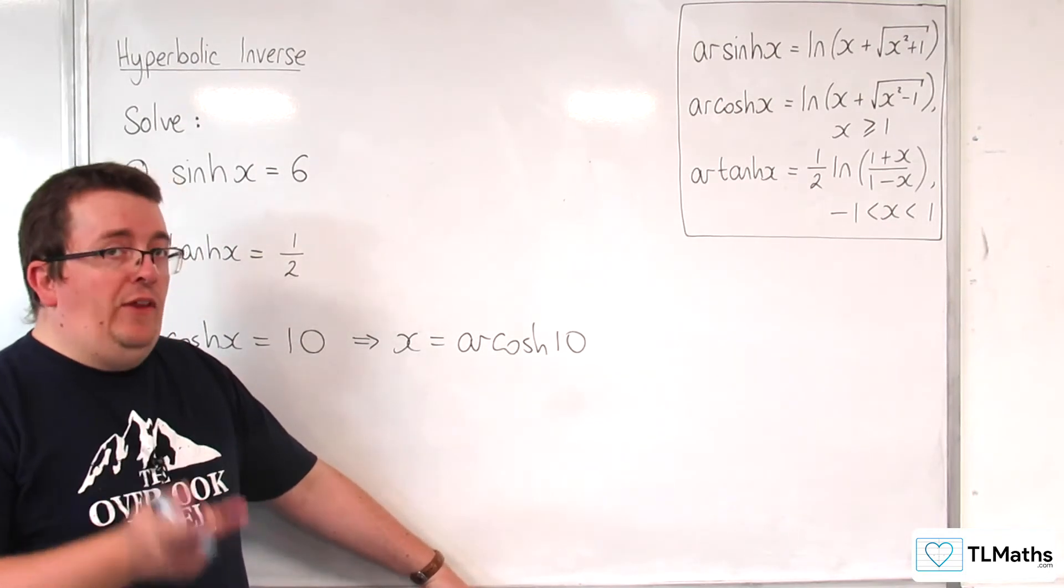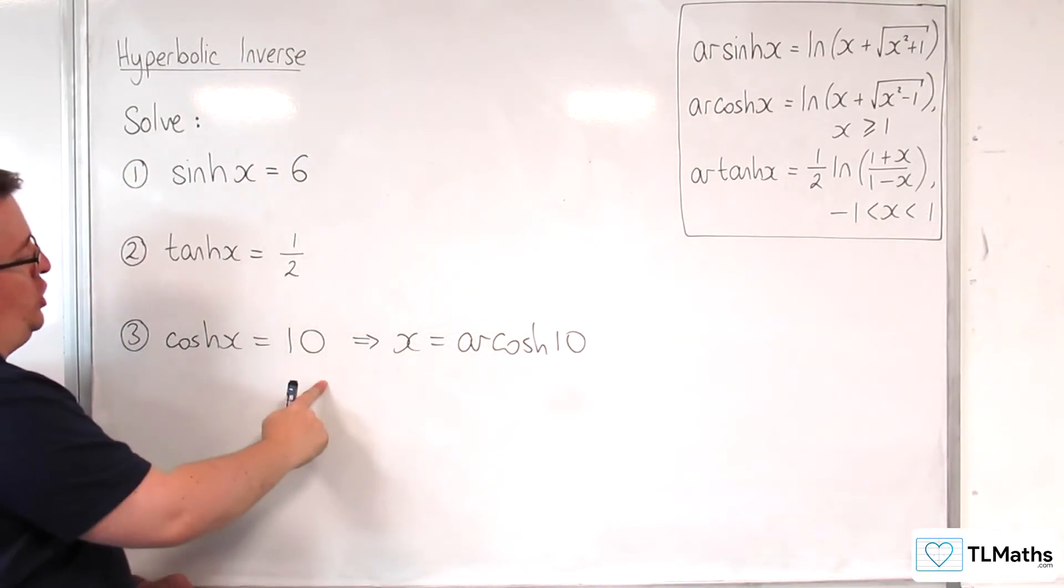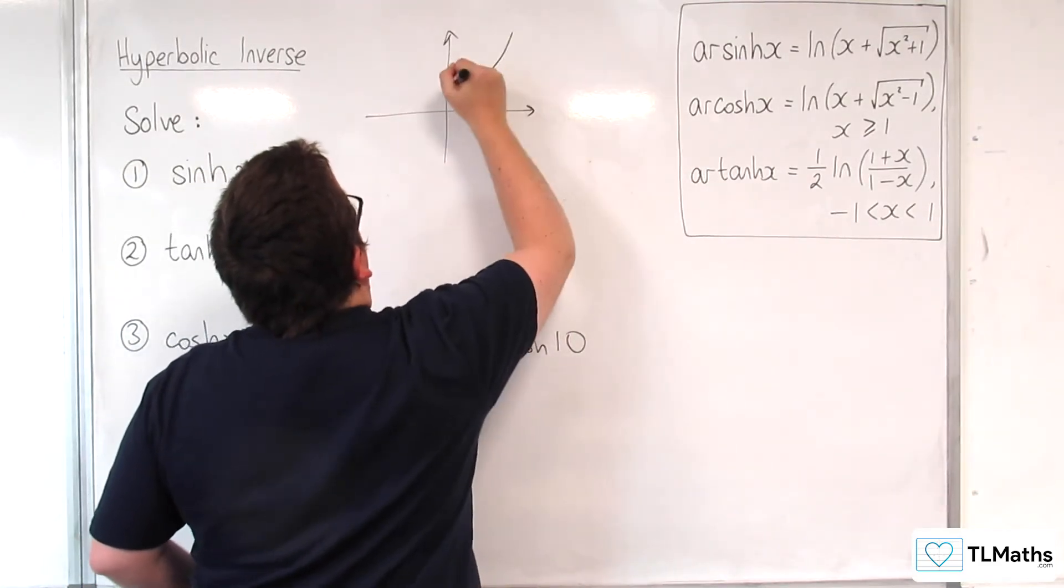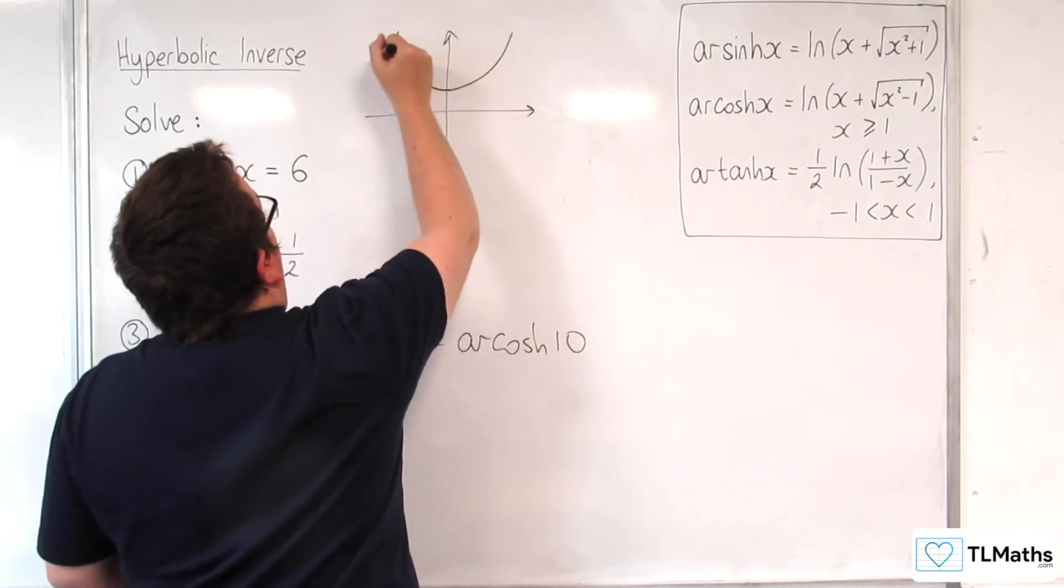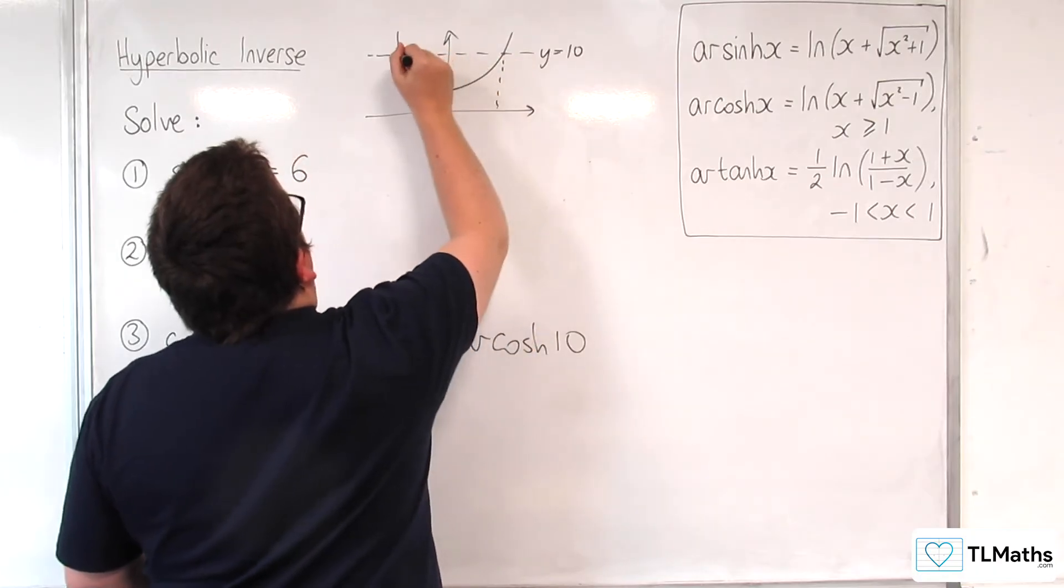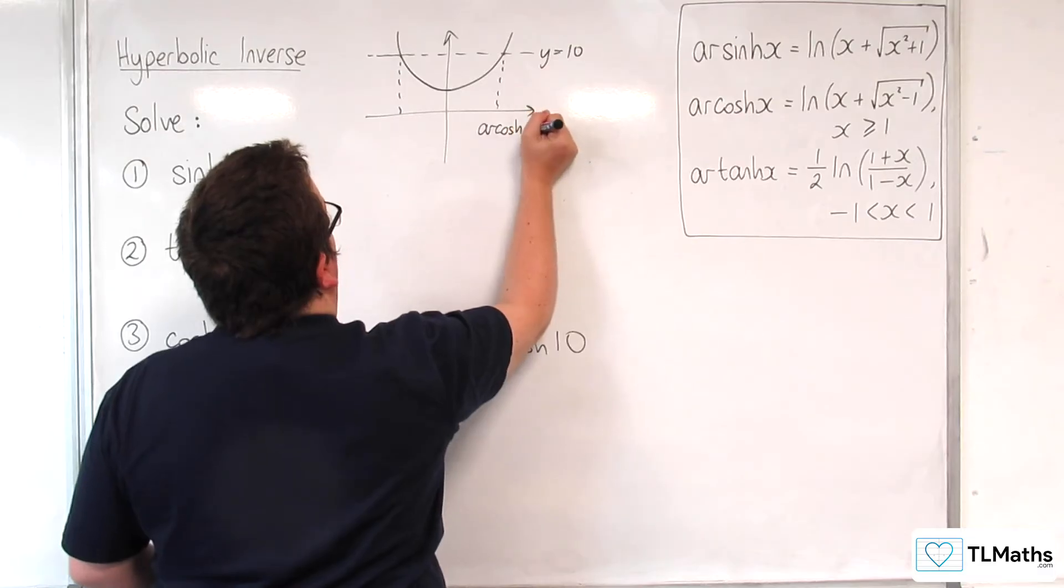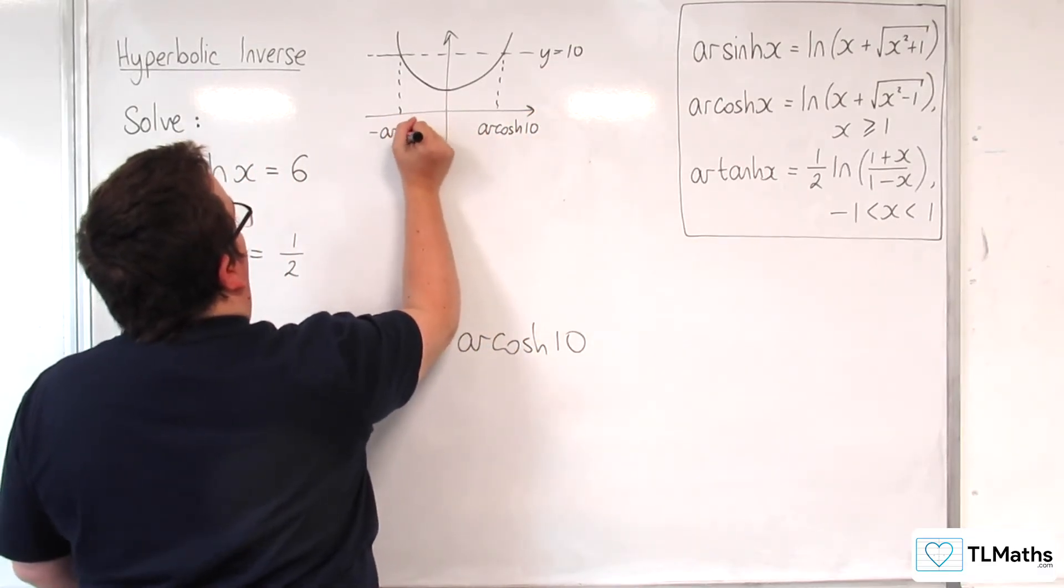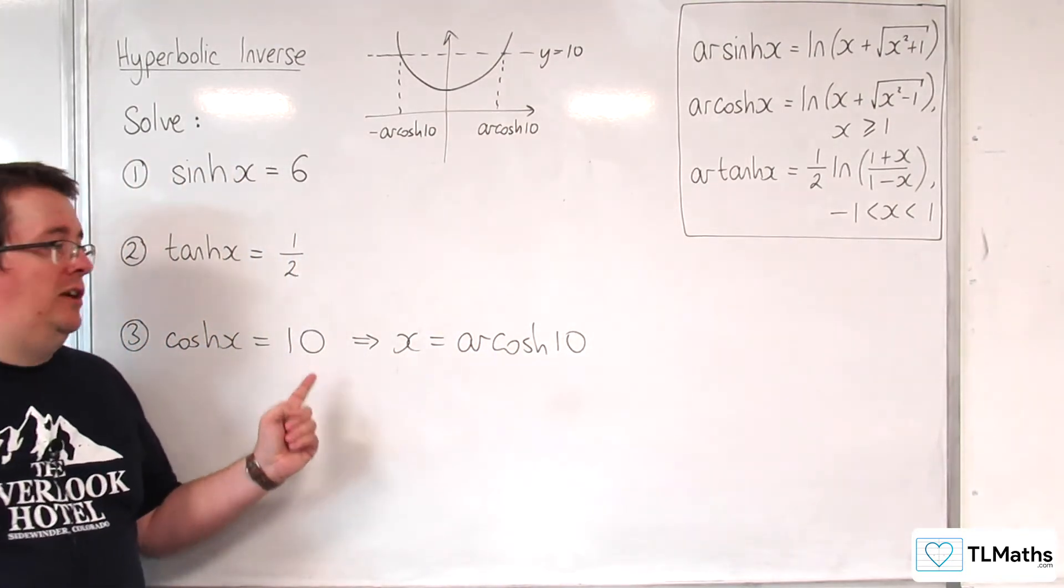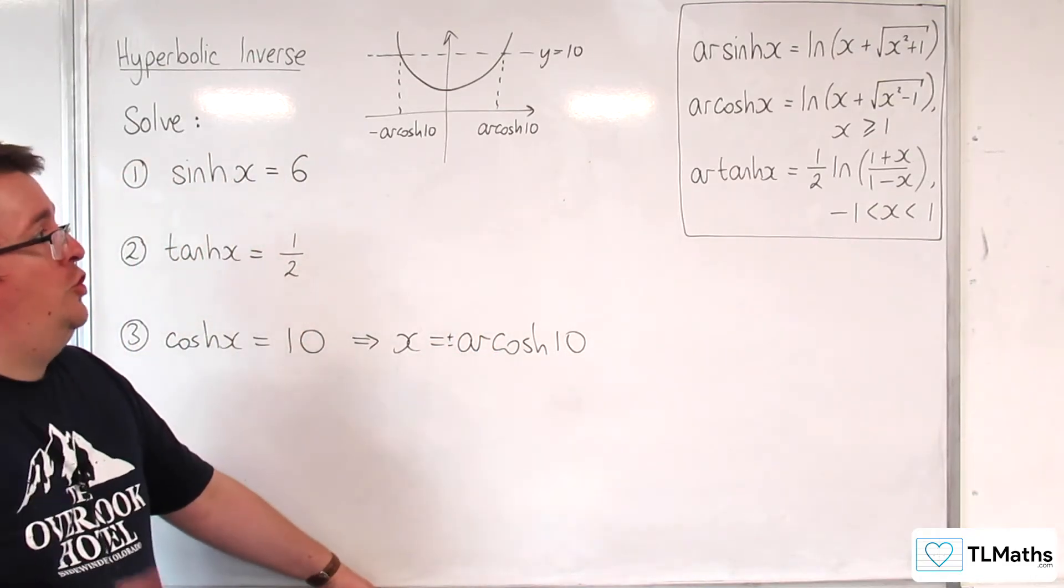Now, be careful with this. Is it just that? Because, if we are solving the equation cosh x equals 10... Cosh looks like this. Here's y is equal to 10. We actually have two solutions here. So, this will be arcosh of 10, and this will be minus arcosh of 10. So, that means that this has two solutions. We're actually looking for plus or minus arcosh of 10.